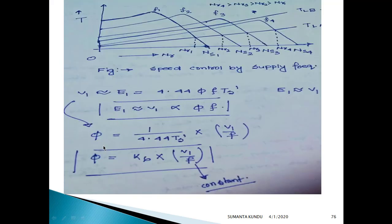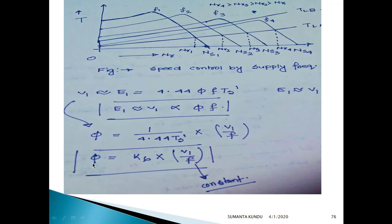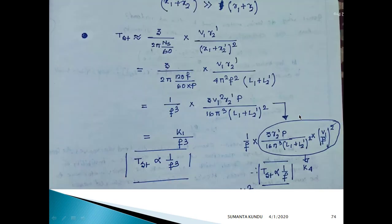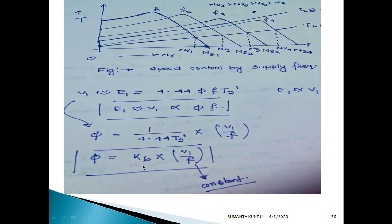Since V1/F is maintained constant, the maximum torque is also constant in the V/F method. Furthermore, Φ equals V1 / (4.44 × F × TS), and since TS is constant and V1/F is constant, the flux is also constant. So if we are able to keep the V/F ratio constant, neither the maximum torque nor the flux changes, even as the frequency changes — which was not the case with pure variable frequency control.